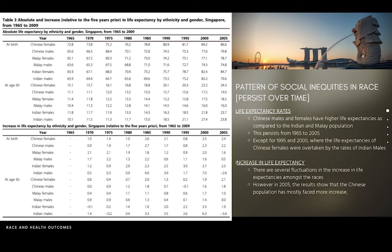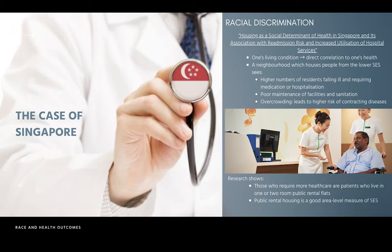The other reading uses housing as a social determinant of health in Singapore and its association with readmission risk and increased utilisation of hospital services. It states that one's health is determined by various factors — social, physical, economical, and individual traits and way of life. One's living condition has a direct correlation to one's health. A neighbourhood with people from lower SES sees higher numbers of residents falling ill and requiring hospitalisation, likely due to poor maintenance, poor sanitation, low air quality, and overcrowding. Research showed that those requiring more healthcare were patients living in one or two-room public rental flats, making public rental housing a good area-level measure of SES.